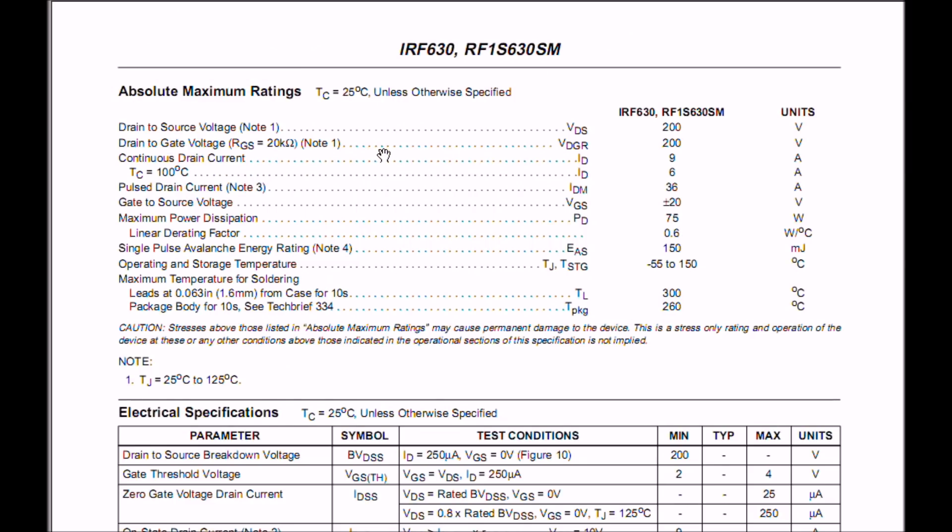Let's look at our electrical characteristics. Continuous drain current. When you hear stuff like continuous drain current, this is assuming that this is a pulse. Most of the tests are with pulses. This says 9 amps. I'm going to be honest with you. I wouldn't run it above 6 or 7 continuously. When they give you these ratings, these are absolute maximum ratings. You'll be wise not to run them at that level.